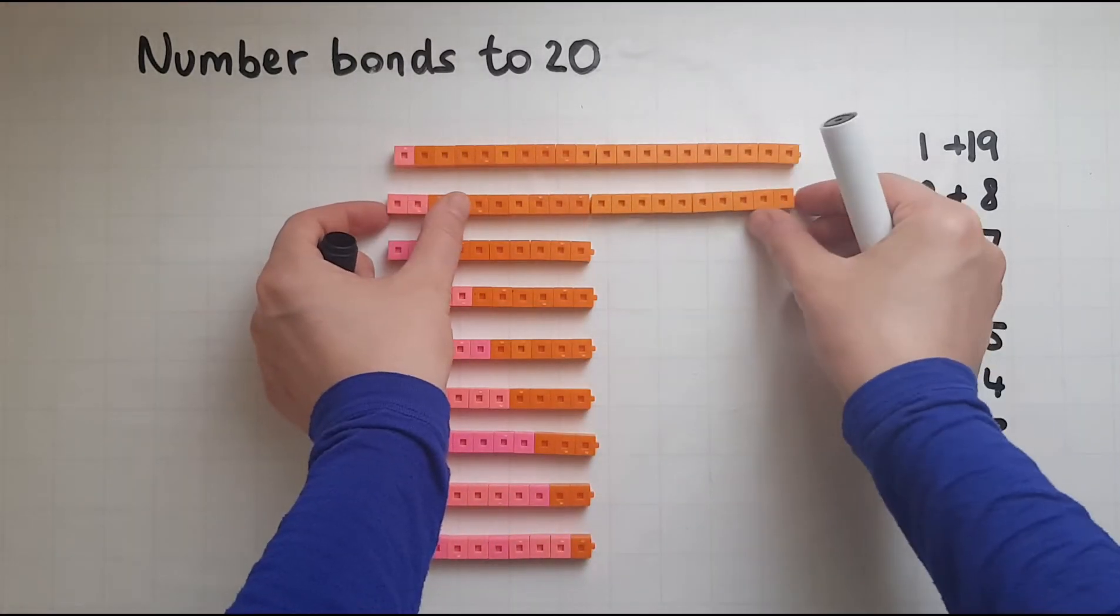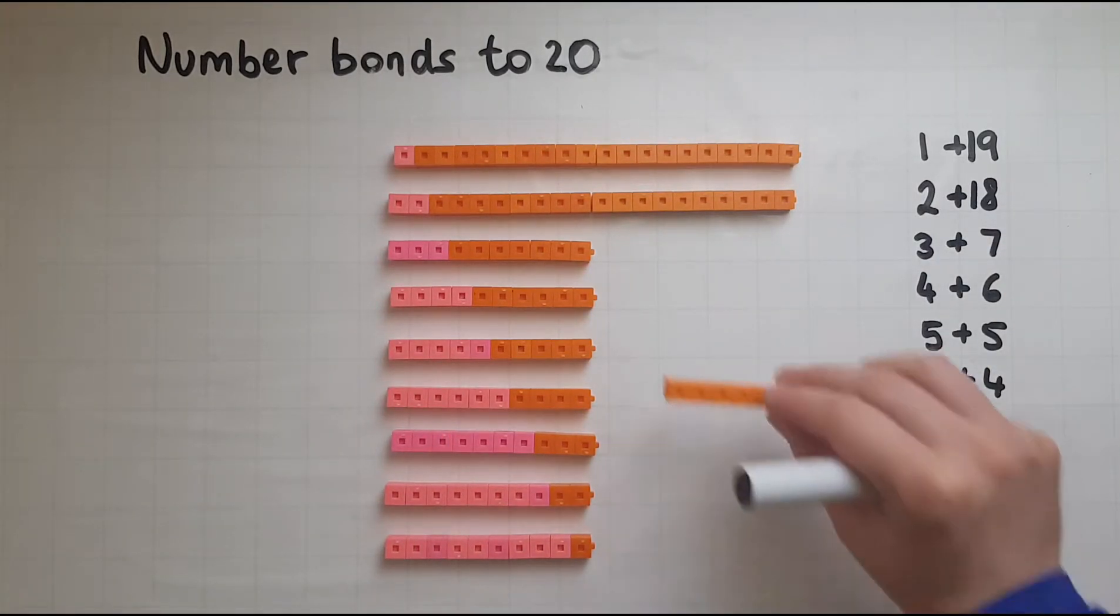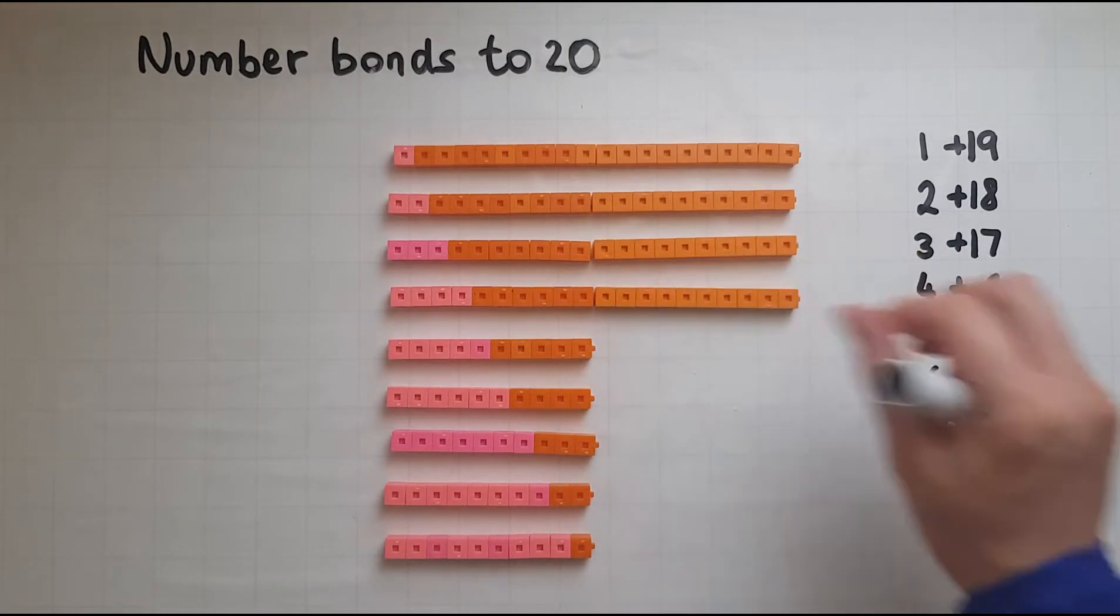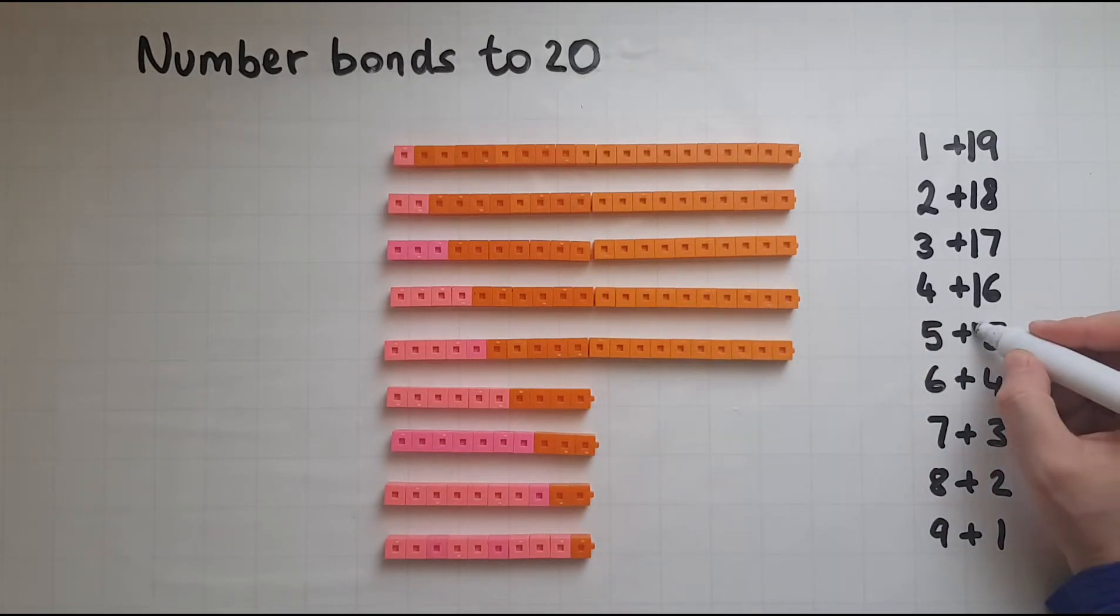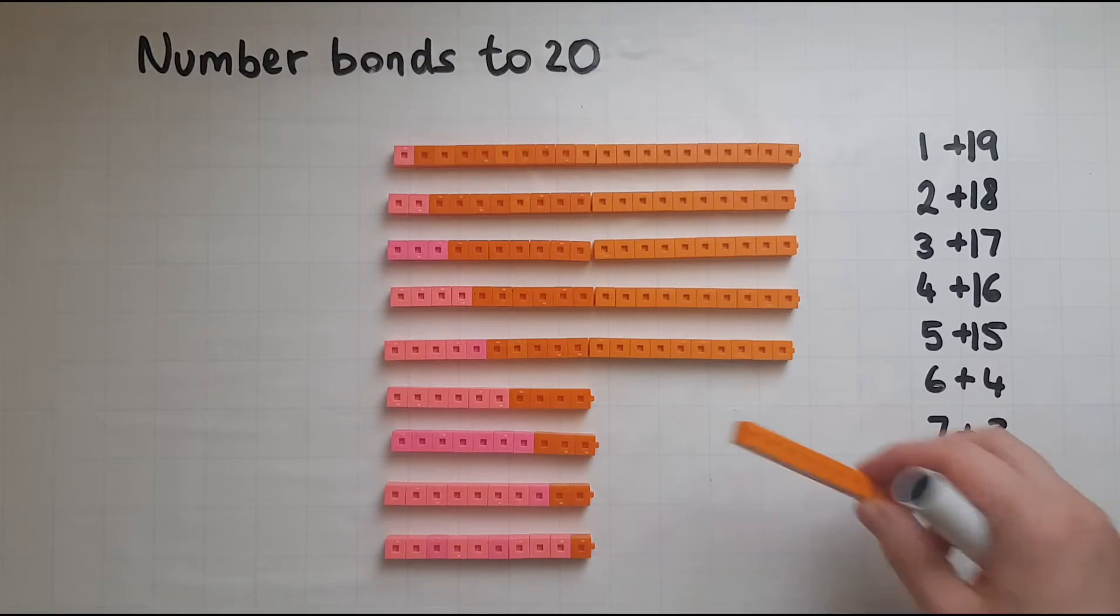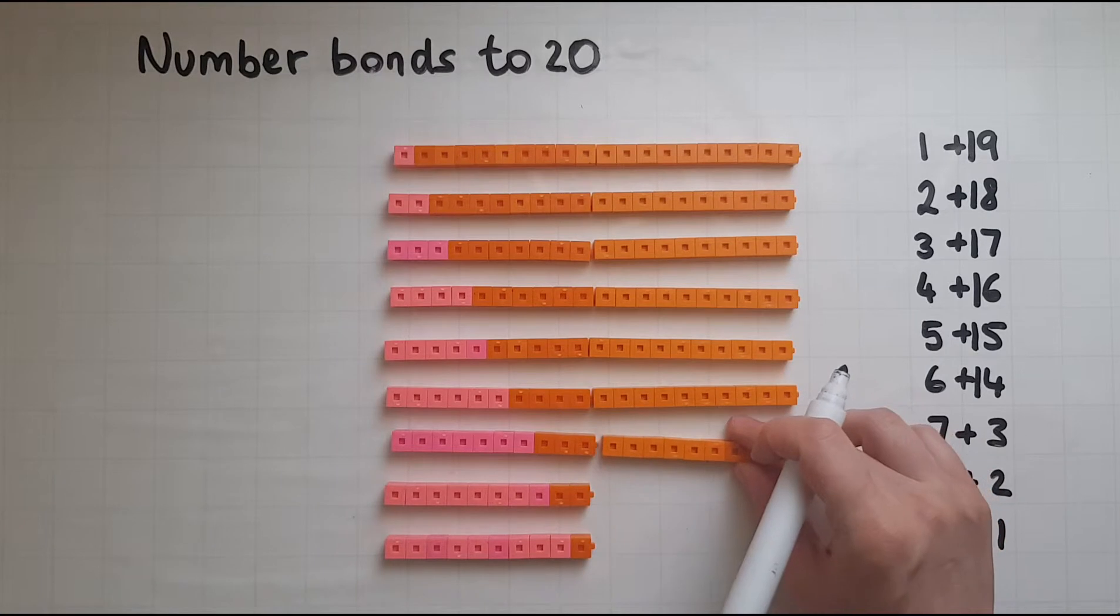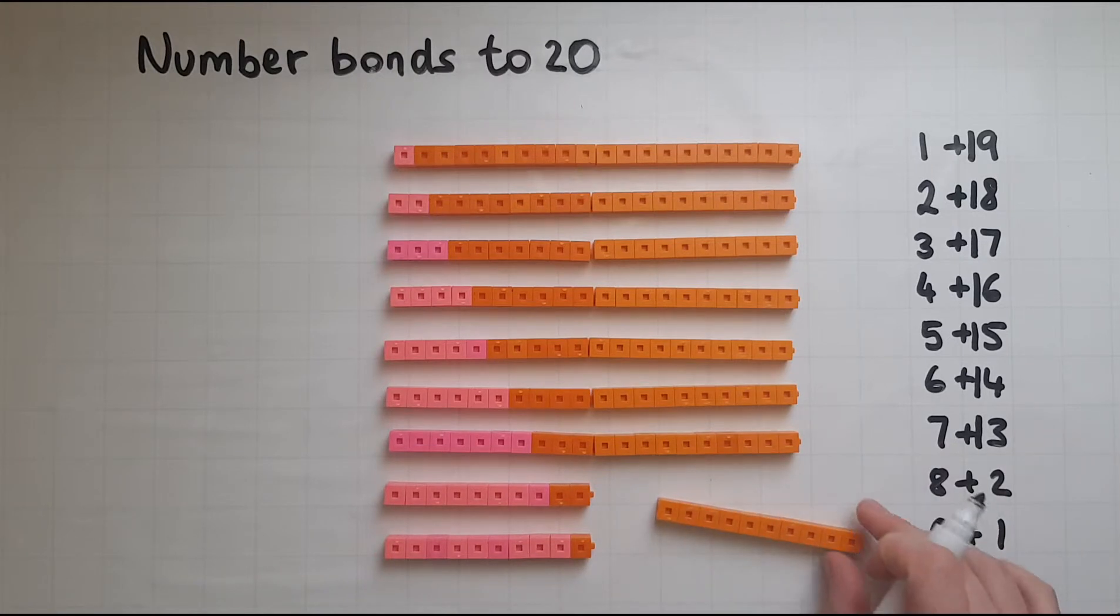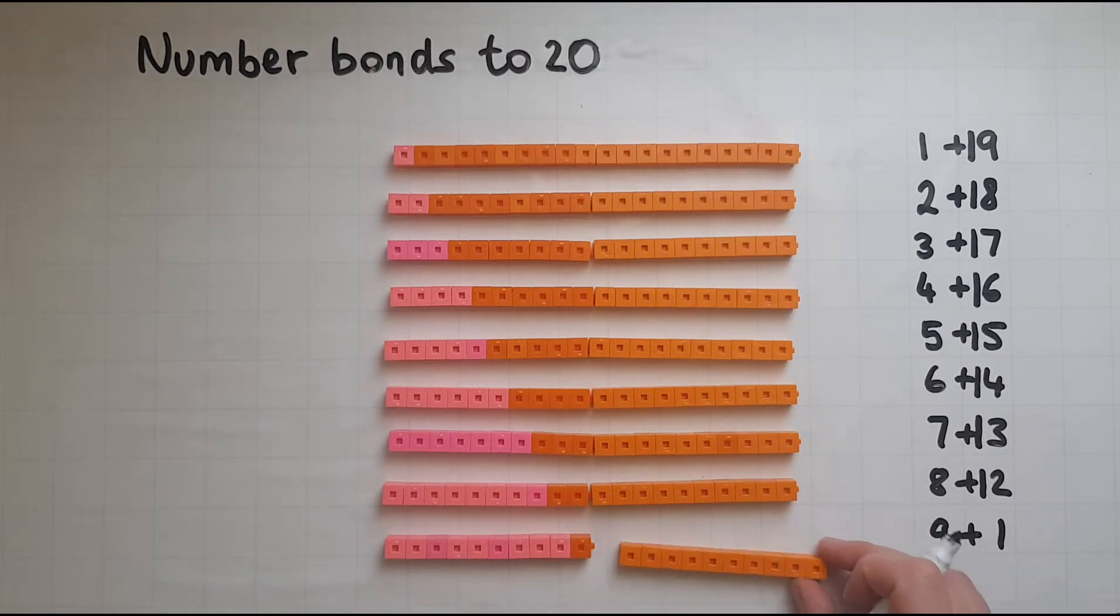Similarly 2 and 18 makes 20, 3 and 17, 4 and 16, 5 and 15, 6 and 14, 7 and 13, 8 and 12, 9 and 11.